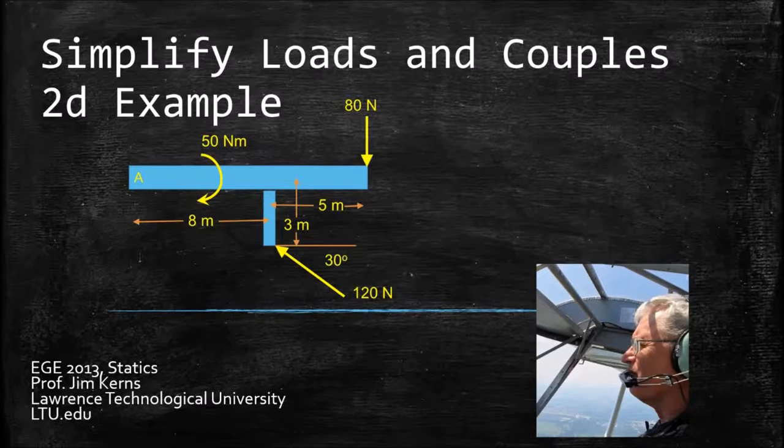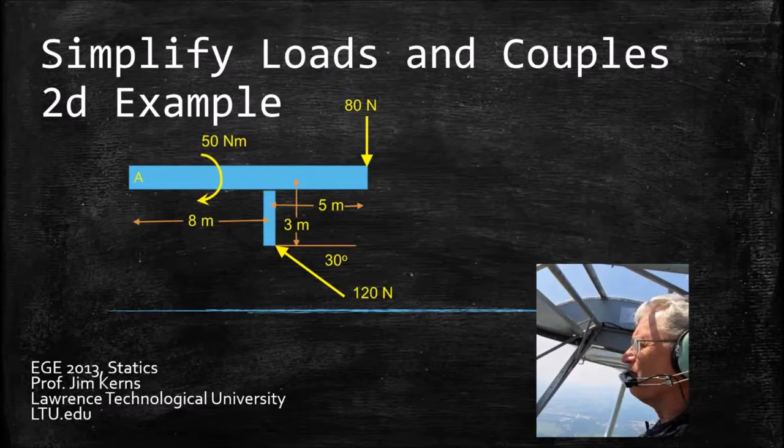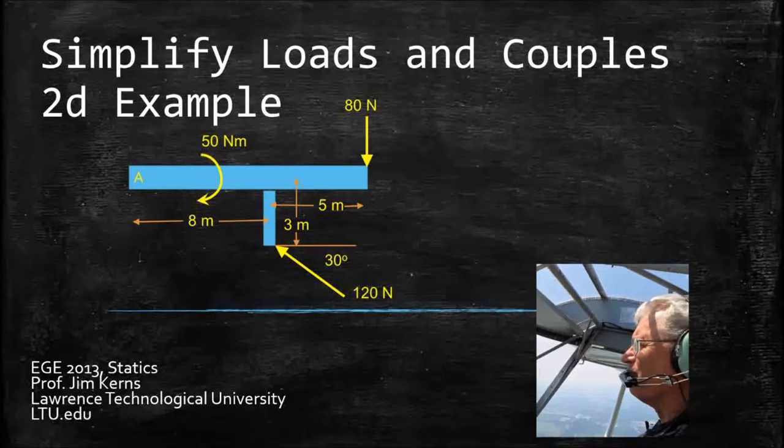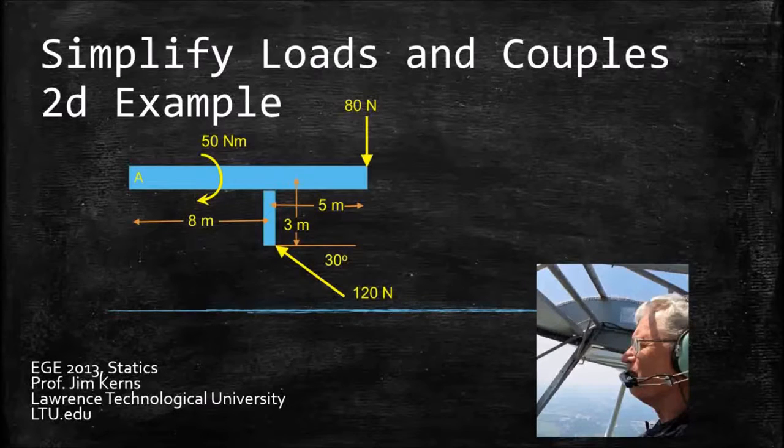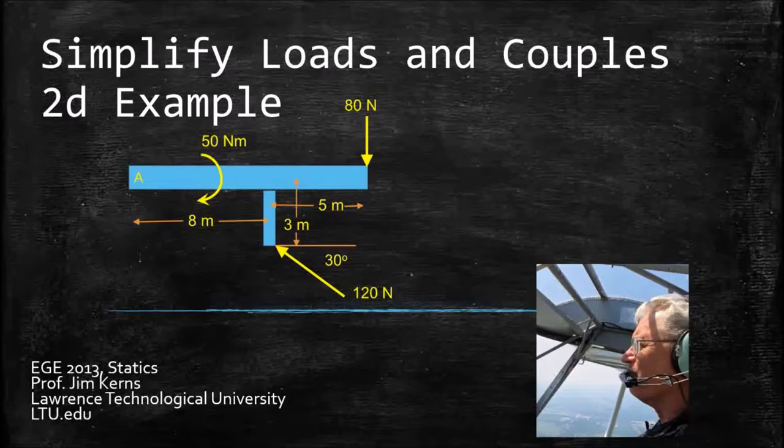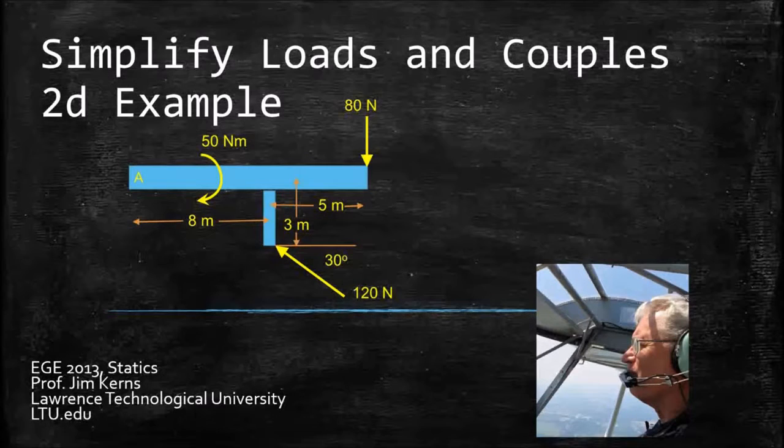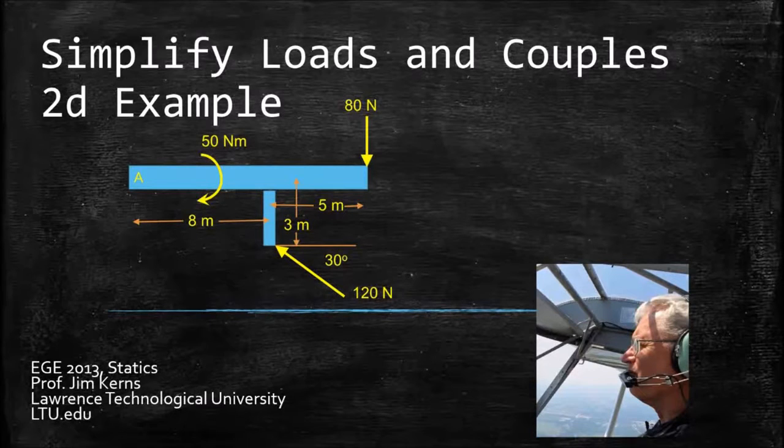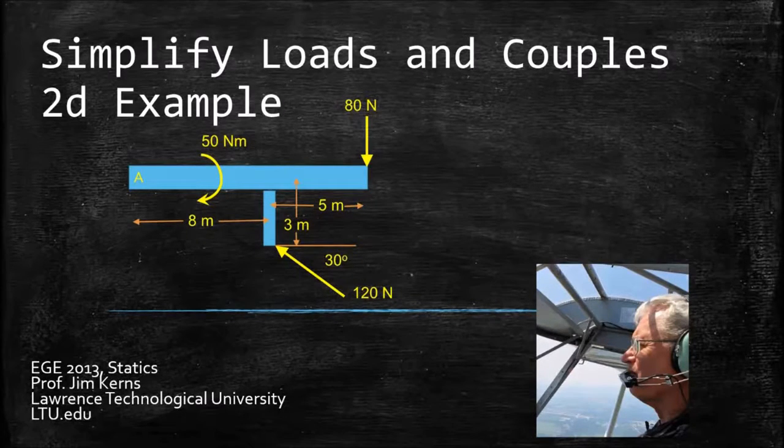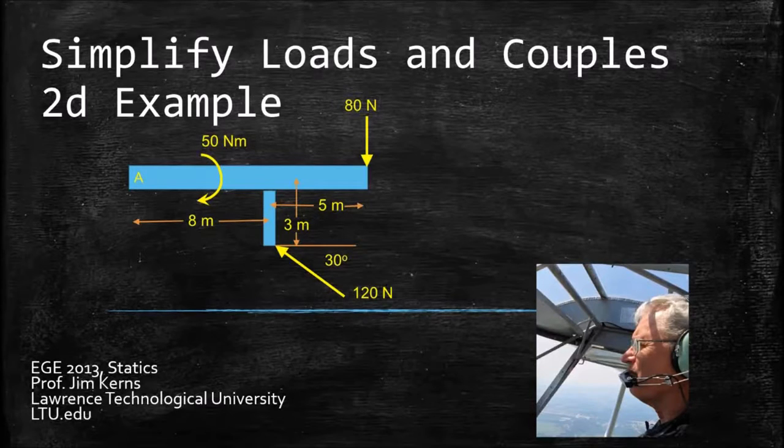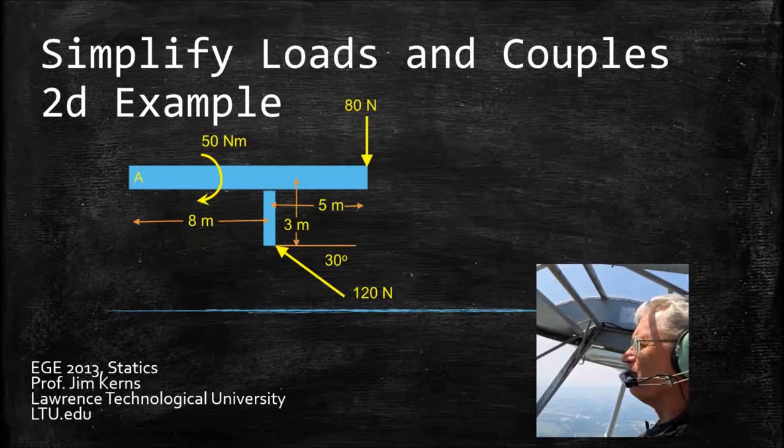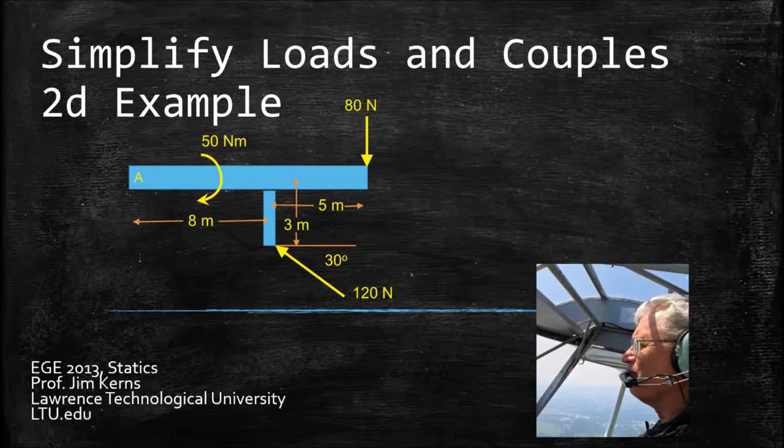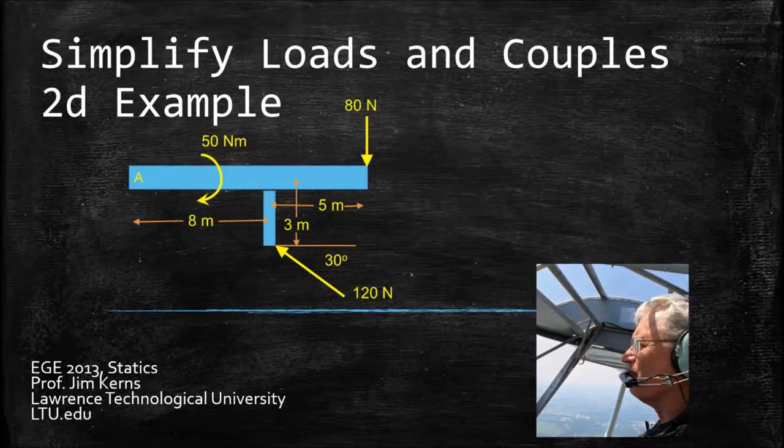Welcome back to Lawrence Tech in Windy Southfield, Michigan today. I'm Jim Kearns, and today we're going to do an example where we're going to simplify a set of loads and a couple on a rather arbitrary shape here, just to walk through the process of reducing these to a single force and single moment at a point, we'll do it at point A, and then we'll take the next step to reduce that to a single force at a specified distance that gives the equivalent force and moment effects as the two forces in one couple we have drawn here.